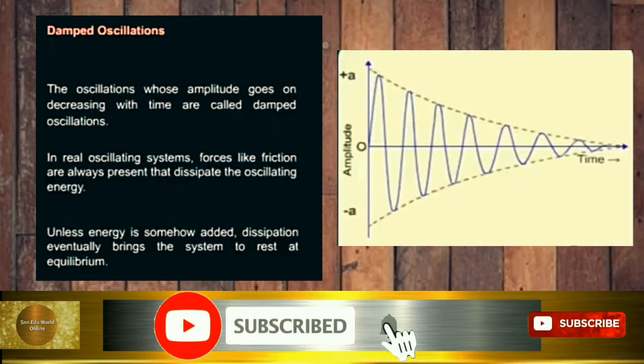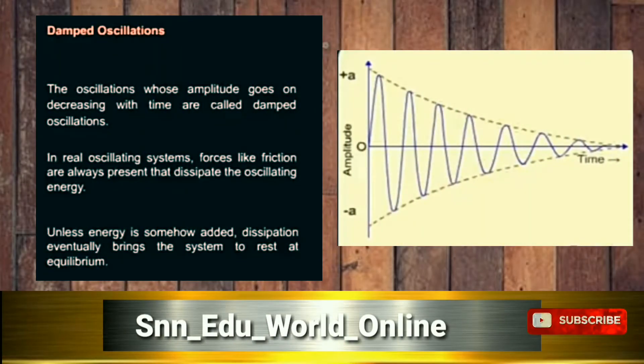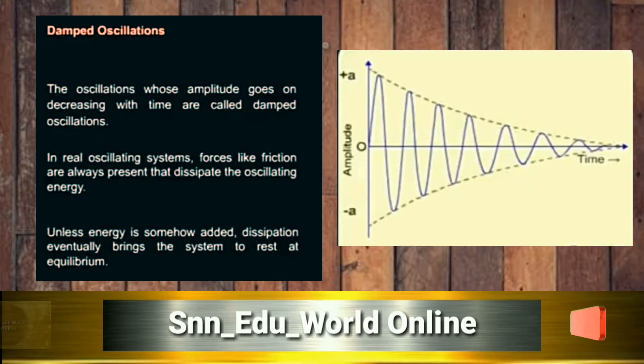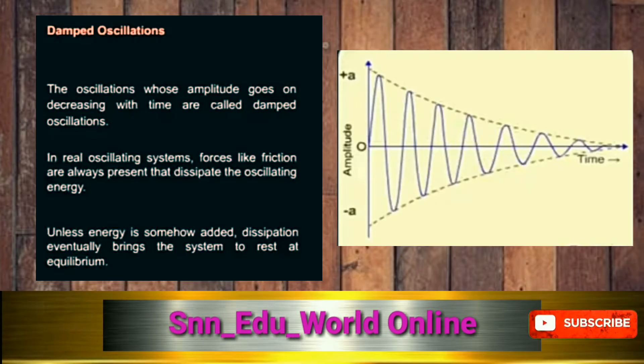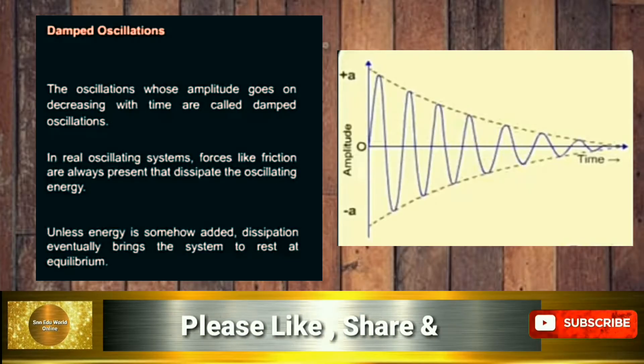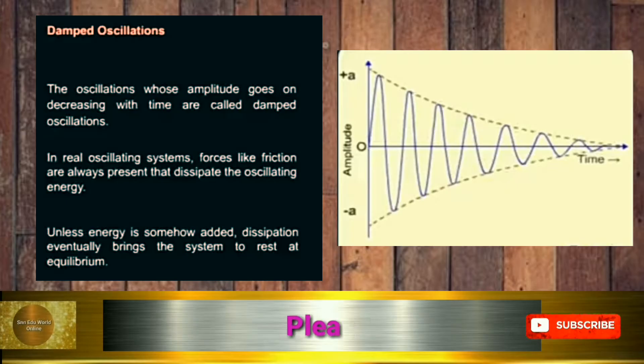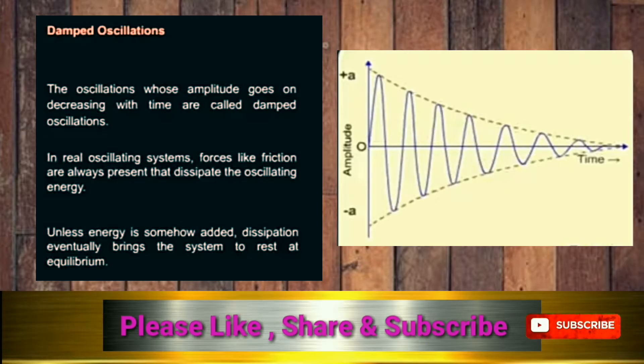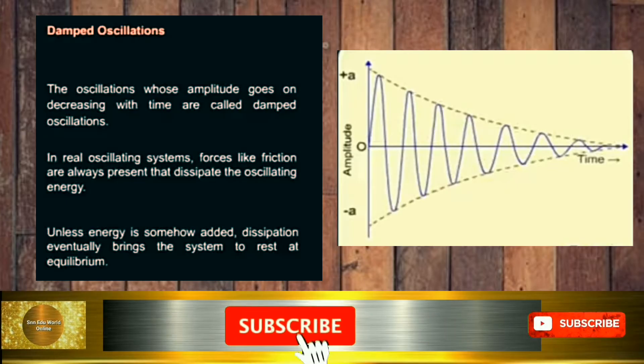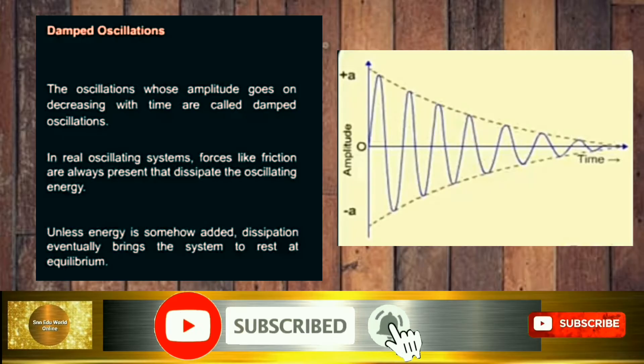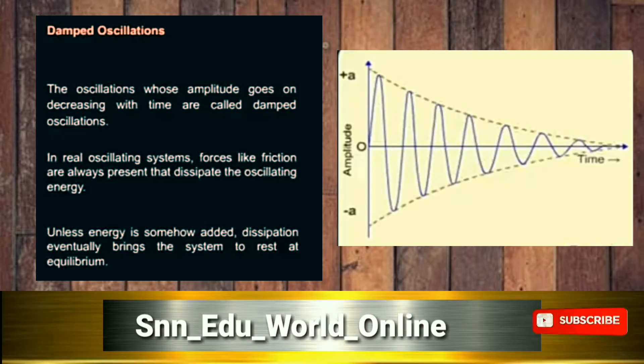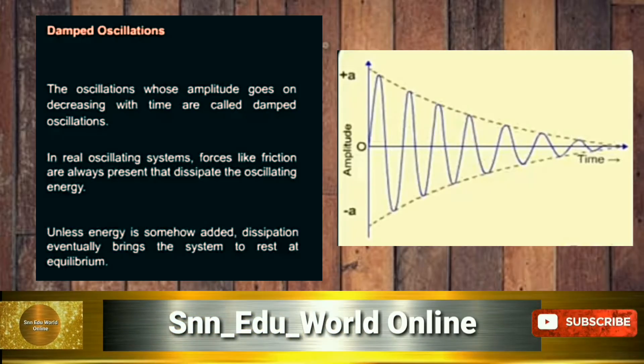First we will start with damped oscillations. The oscillations whose amplitude goes on decreasing with time are called damped oscillations. In real oscillating systems, forces like friction are always present that dissipate the oscillating energy. Unless energy is somehow added, dissipation eventually brings the system to rest at equilibrium.